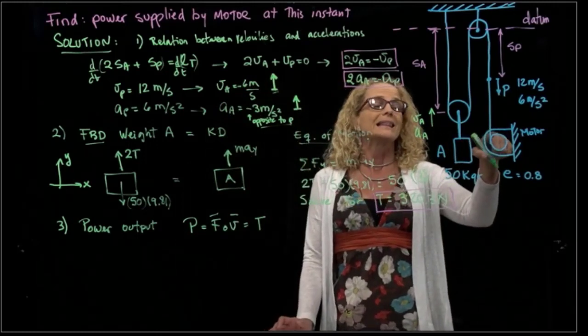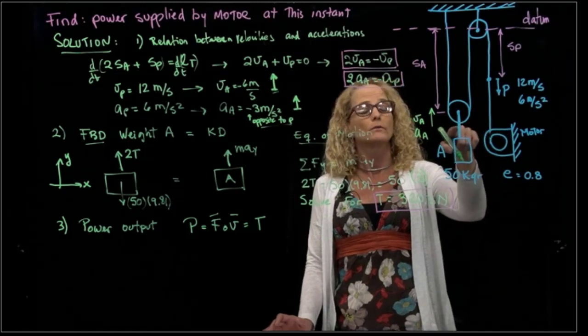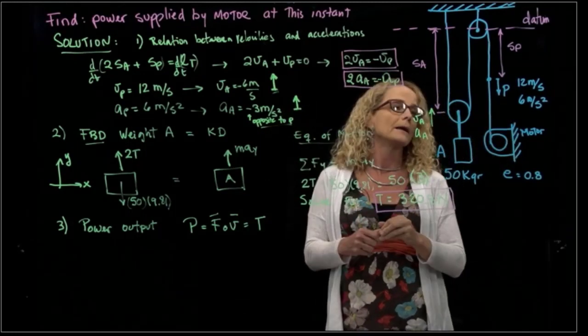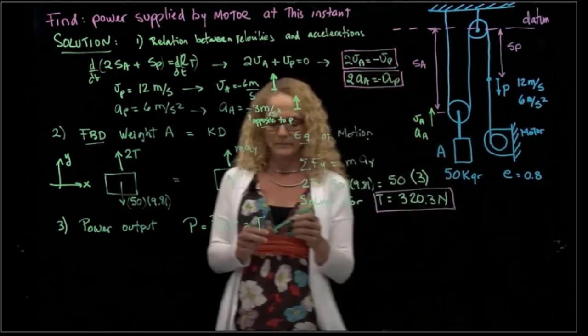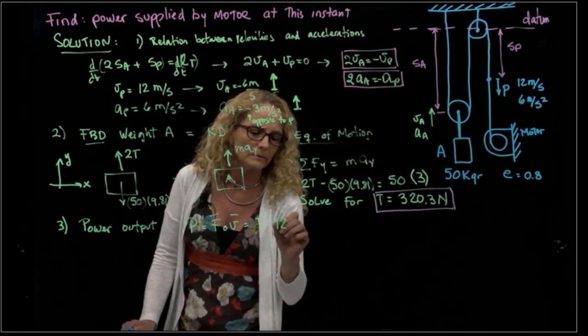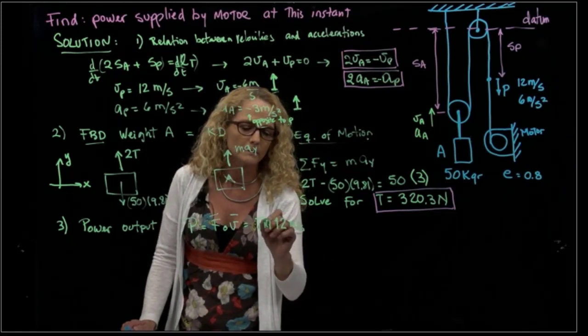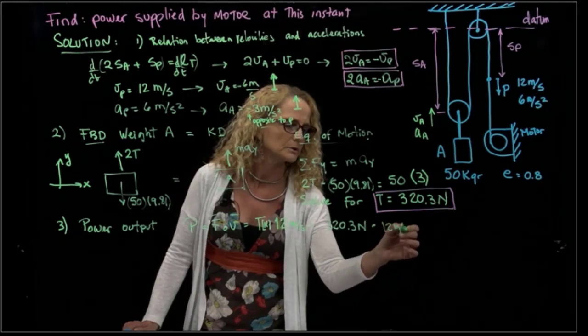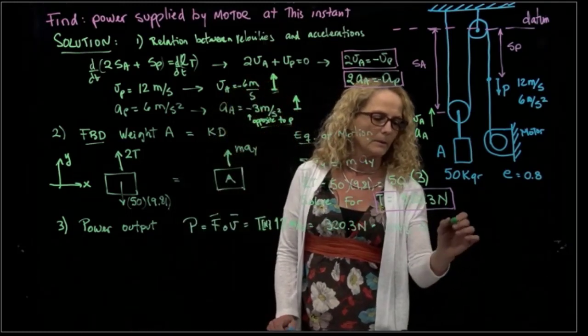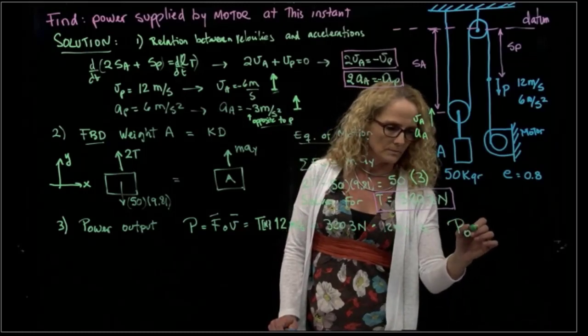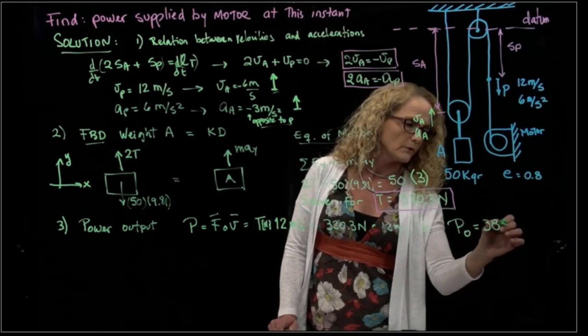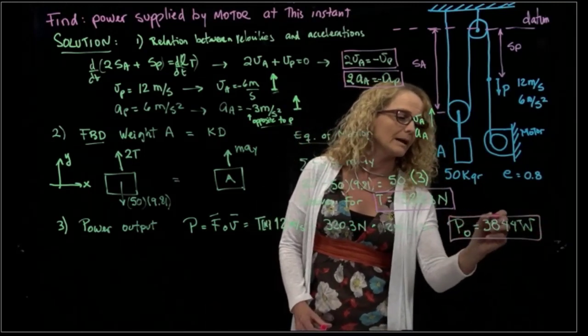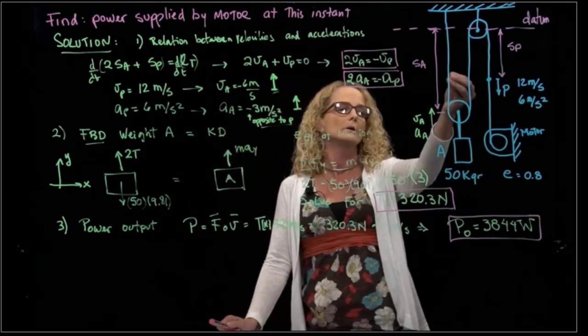Which velocity? We want to calculate the power of the motor. So it's the velocity not from A, but from how much is this motor pulling that cable. So we will use this velocity: 12 meters per second. And this is Newtons. So we will have 323 Newtons times 12 meters per second, and that gives us a result that the power output equals 3844 watts.